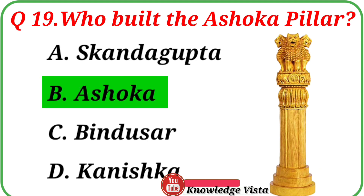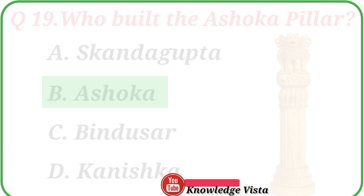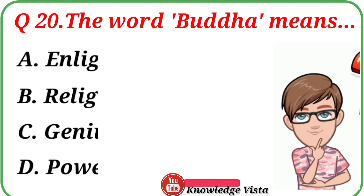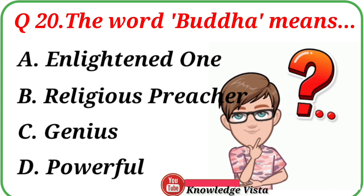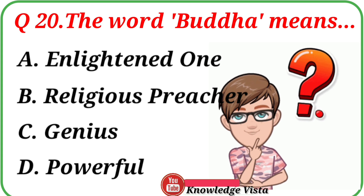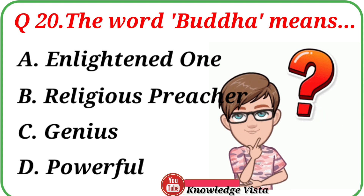Question number twenty: The word 'Buddha' means — your options are: A. Enlightened One, B. Religious Preacher, C. Genius, D. Powerful.